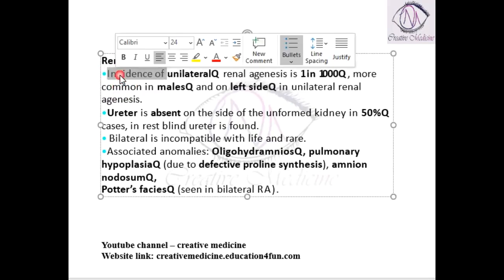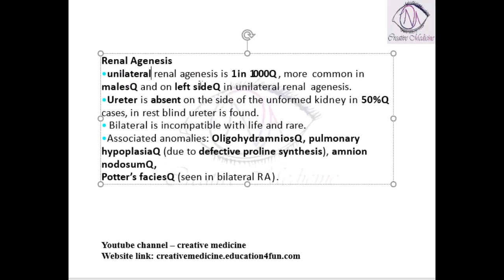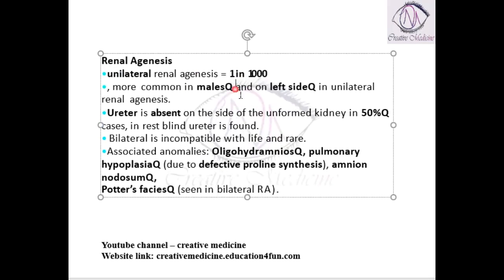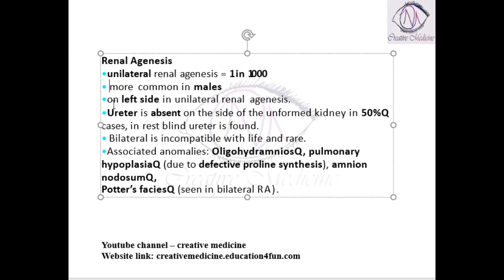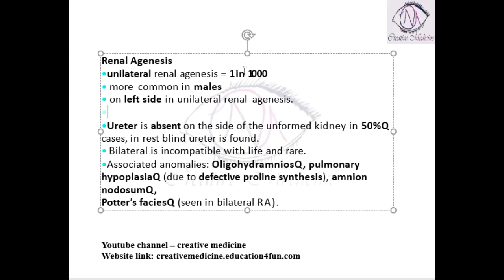Renal agenesis is most commonly unilateral. Unilateral renal agenesis is seen in 1 in 1000 individuals. It is more commonly seen in males and it is more common on the left side.